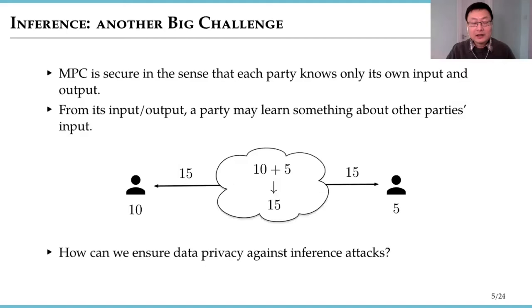Another big challenge is inference. Although in MPC, the parties cannot see directly the other parties' inputs, they can infer from the output and its own inputs something. For example, if Alice and Bob run an MPC protocol which adds up their inputs, then from the sum and its own inputs, Bob can figure out Alice's inputs. So, even though cryptography is used, privacy can still be violated. And we need to think about how to protect against inference attacks.